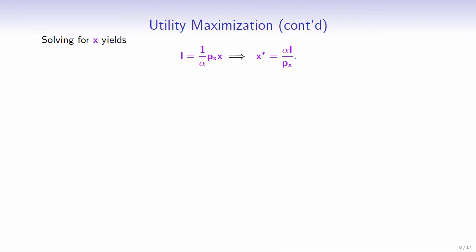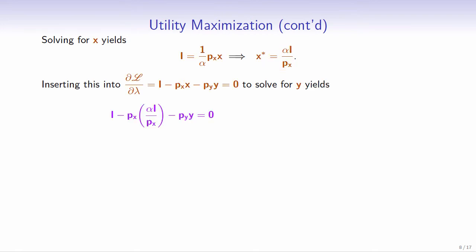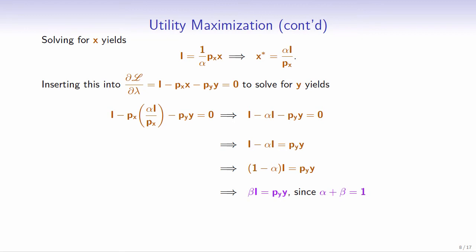Recall that income, alpha, and the price of good x are all given, so we can solve for x, giving us alpha times income over the price of good x. Inserting this into the partial derivative of L with respect to lambda to solve for y, and simplifying, we get (1 minus alpha) times income equals the price of good y times y. Since alpha plus beta equals 1, we have 1 minus alpha equals beta. Solving for y gives y equals beta times income over the price of good y.